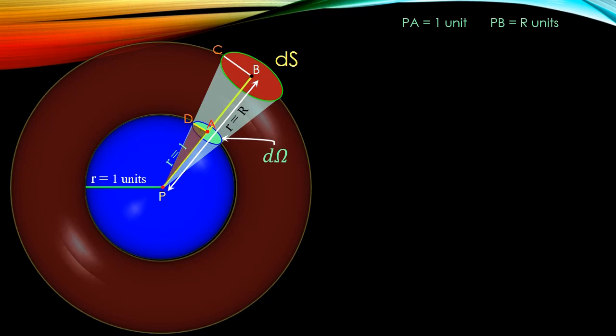If we consider triangle PAD which is similar to triangle PBC, then we can write AD by BC is equal to PA by PB. Substituting the value of PA and PB we get AD by BC equal to 1 by R.